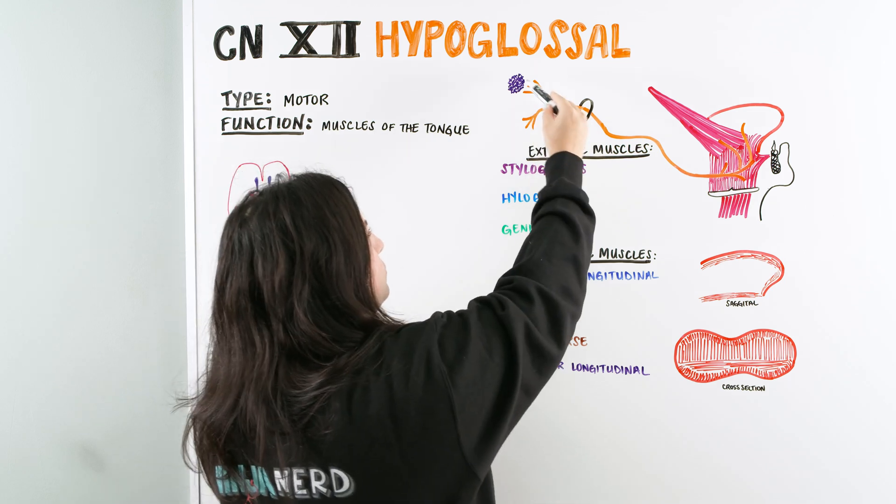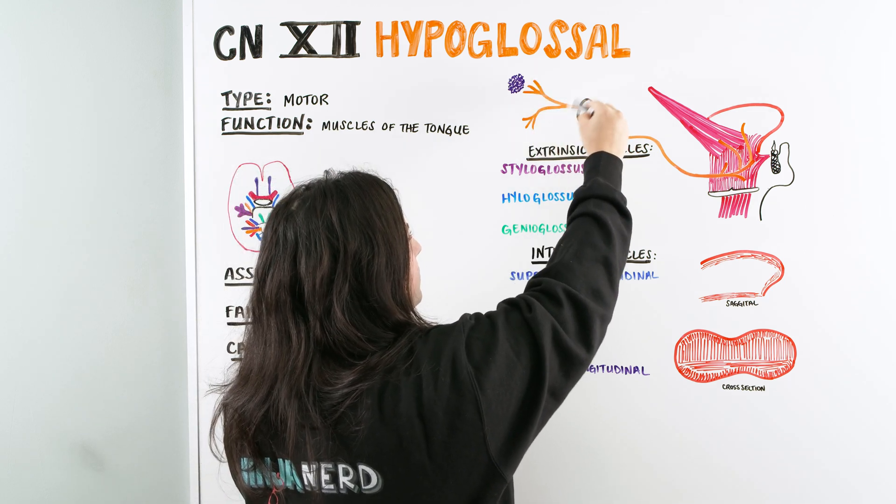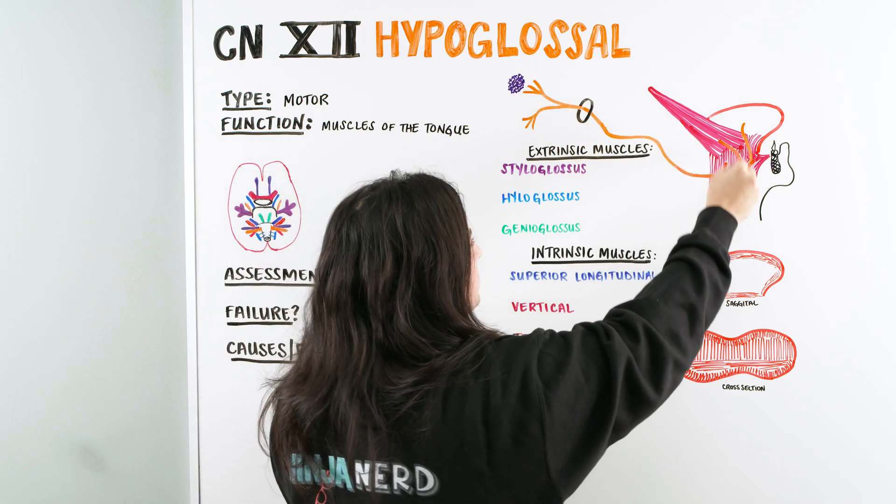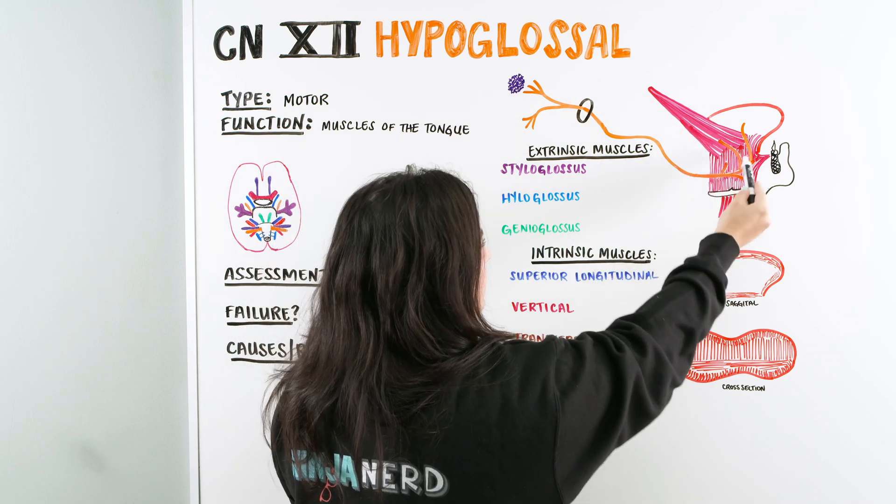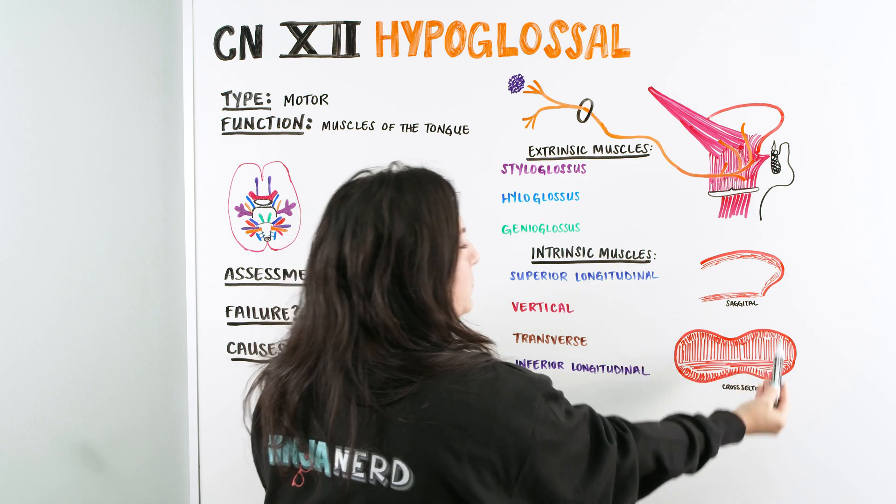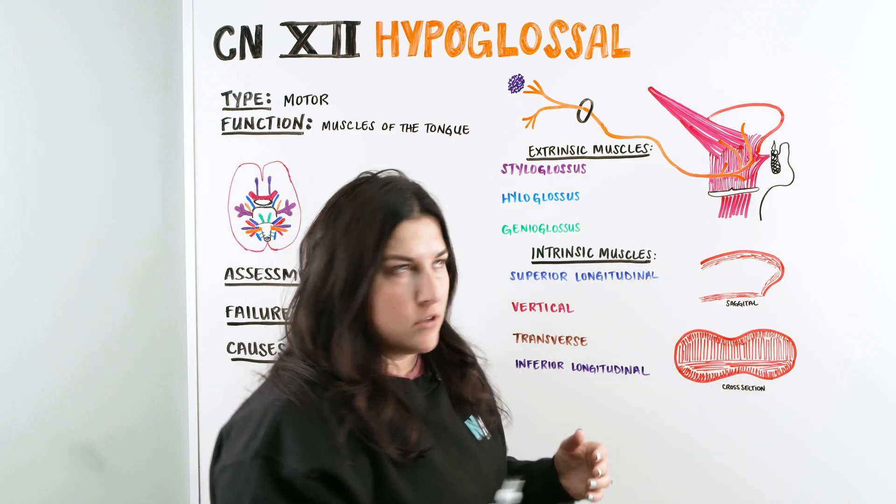So we can see here the hypoglossal nucleus, as the nerve comes out, goes through the hypoglossal canal, down into underneath the tongue, we have some extrinsic muscles, which are muscles that are not within the tongue. And then we have intrinsic, which are muscles within the tongue, that are controlled by the hypoglossal.